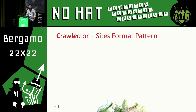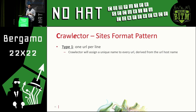Now we come to the site format patterns, which is probably one of the core features in terms of input. It supports three types. The easiest one is type one, which consists of one domain per line. You don't have to give it an ID — just give it the domain as is, irrespective of the protocol or any URL appended to the top-level domain. The framework itself will assign a unique ID to it, derived from the host name, so it's self-descriptive just by looking at the ID.